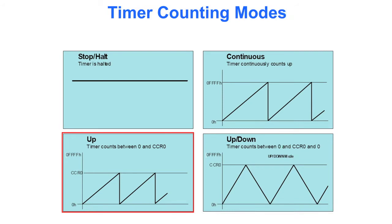Up-down, where it counts from 0 up to counter-compare register 0, back down, back up, and so on. I've got to tell you, I don't think stop and halt is really a counting mode.